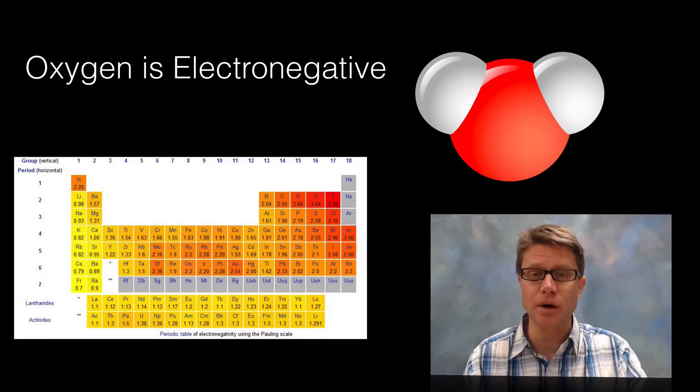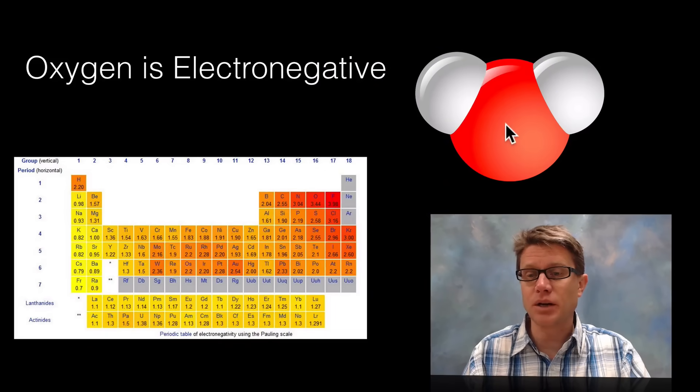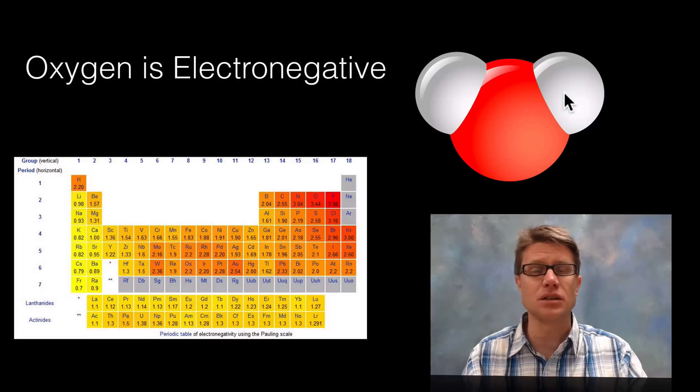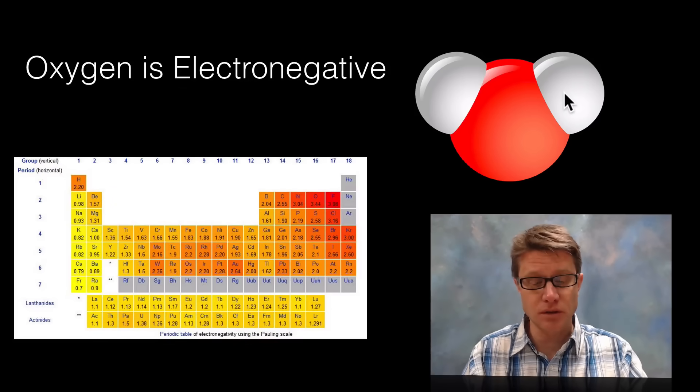Let's start by looking at one water molecule. It's made up of one oxygen atom and two hydrogen atoms. What you should know is that oxygen is highly electronegative. What does that mean? It's going to pull electrons towards it.